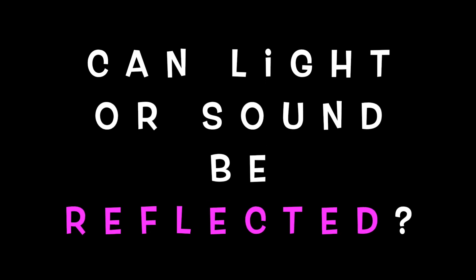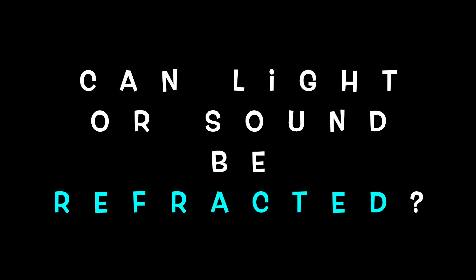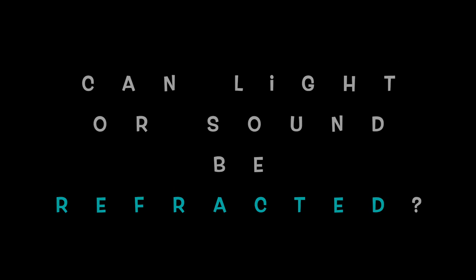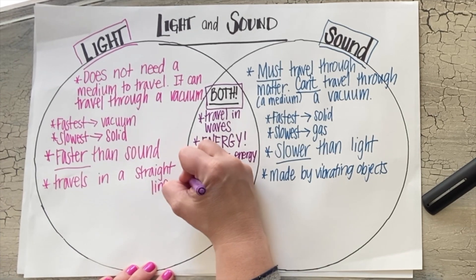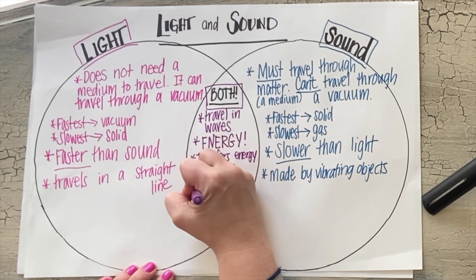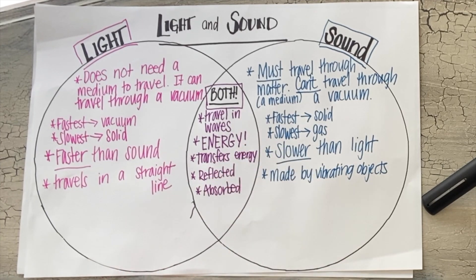Can light or sound be reflected? Can light or sound be absorbed? Both light and sound can be reflected and absorbed. A reflection for sound is an echo; a reflection for light is what we see. They can both be absorbed — sound can be absorbed to prevent echoes, and light can be absorbed. A color that absorbs all colors of light is black, and white reflects all colors of light.